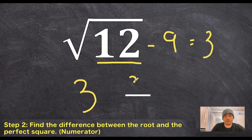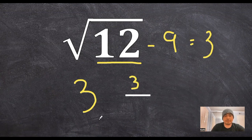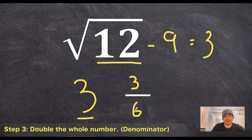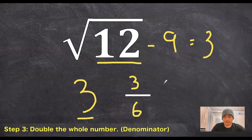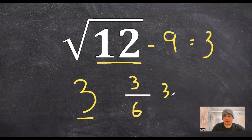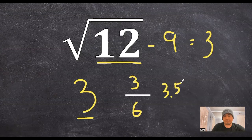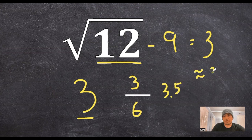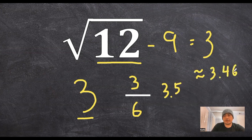So that actually becomes our numerator for our fraction. And then the last step is really easy. We just double the whole number here. So it's 6. So our approximate answer mentally in our head is 3.5. And then if we plug this into the calculator to double check, our answer comes out to 3.46, which is awfully close to our mental calculation.